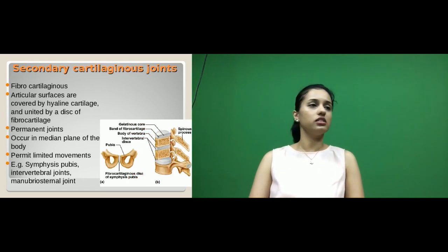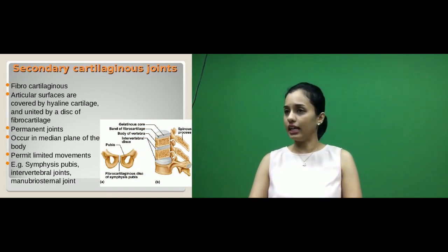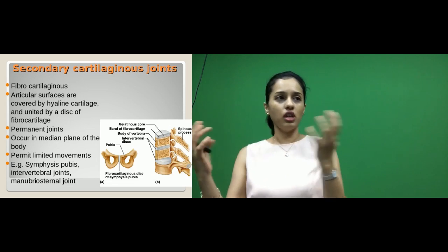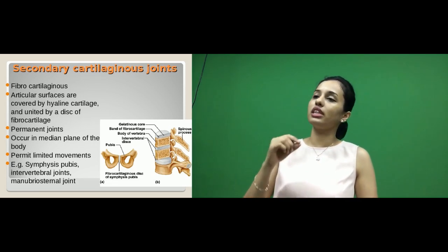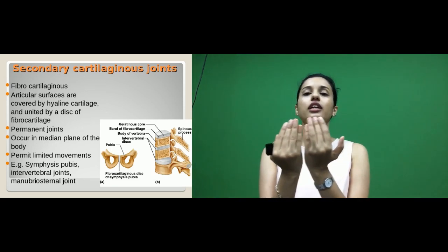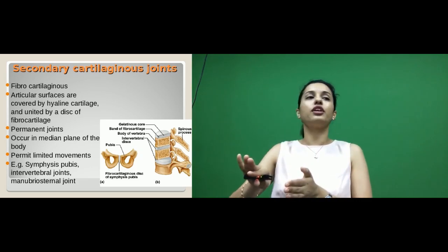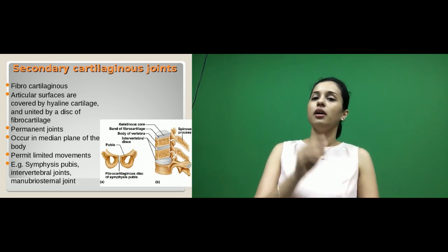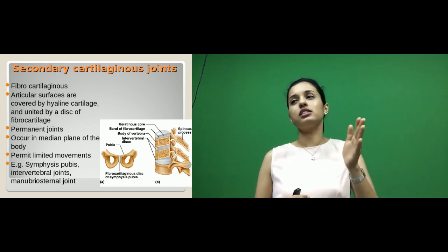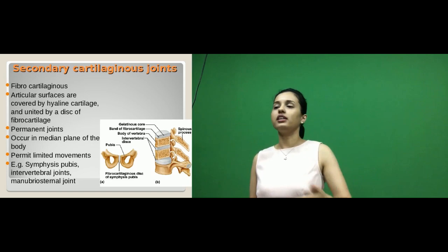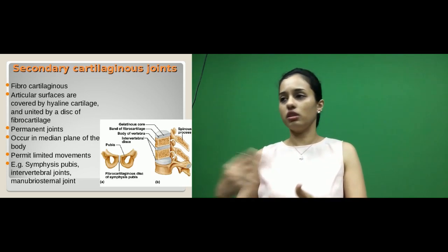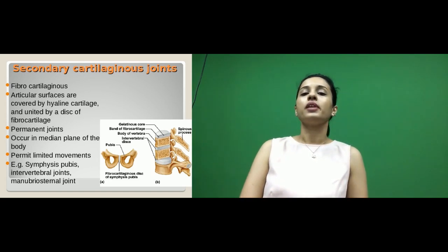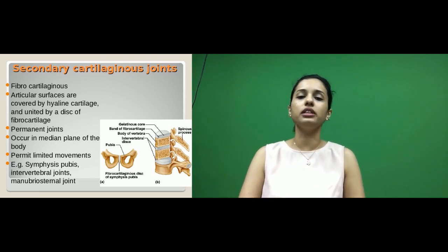Secondary cartilaginous joints are different from primary. Here you see a plate of hyaline cartilage only around the articular surfaces — the areas of the bone where they meet. These articular surfaces are joined by fibrocartilaginous tissue. Unlike primary cartilage, which is temporary and ossifies, secondary cartilage is permanent and is not replaced by bone. These joints are mainly present at the median plane and permit limited movement.